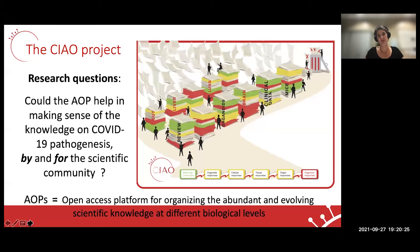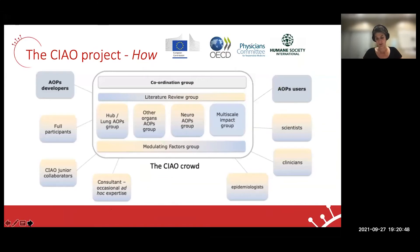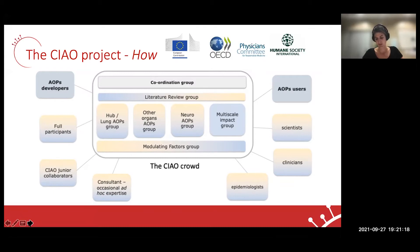Back to our research question: could AOP help make sense of the knowledge on COVID-19 pathogenesis by and for the scientific community? AOPs are an open access platform for organizing abundant and evolving scientific knowledge at different biological levels. Currently, more than 70 scientists from 40 different organizations worldwide are participating — from universities, NGOs, hospitals, industries, and public or governmental organizations. The project was initiated and is coordinated by the Joint Research Center of the European Commission, the OECD, the Humane Society International, the Physicians Committee for Responsible Medicine, and other scientists from academia.